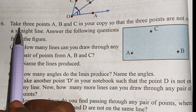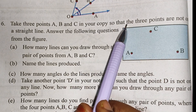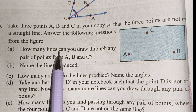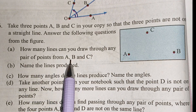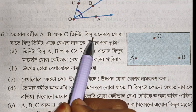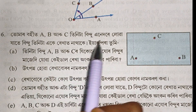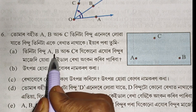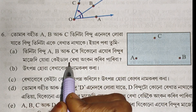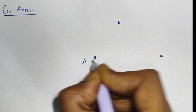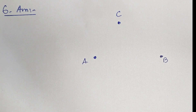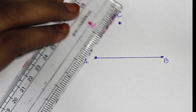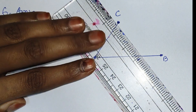Question number 6: Take three points A, B, and C in your copy so that the three points are not on a straight line. Answer the following questions from the figure. How many lines can you draw through any pair of points from A, B, and C?